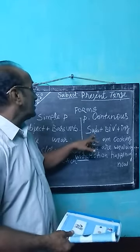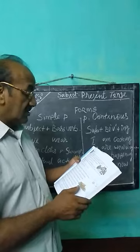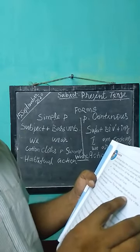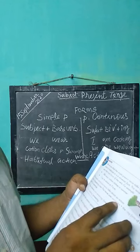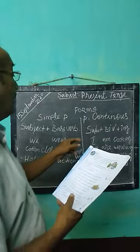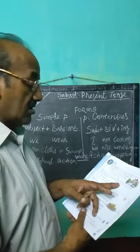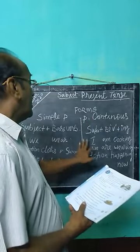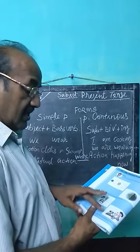Now, present continuous: subject plus be-verb plus ing. The be-verb in present tense is am, is, or are. So the structure is: subject, be-verb, verb-ing. For example: I am cooking. She is painting. He is maneuvering. We can also say 'we are wearing cotton clothes' — that can be made into present continuous.